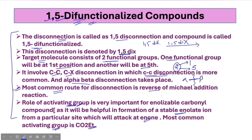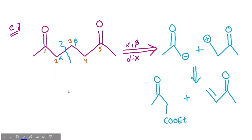Now let's discuss these points with an example so you can easily understand them. In this example, we have taken a 1,5-difunctionalized compound and numbered the carbons 1, 2, 3, 4, and 5. You will see 2 functional groups in this compound — the first functional group is in the first position and the second functional group is in the fifth position.